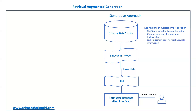Another limitation is domain-specific accurate information. LLMs are trained on publicly available external datasets, which include most information but in a generic way. For example, it may have information about how HR policies work generally, but there could be company-specific policies that it doesn't have. To get that specific knowledge, you'd need to retrain the model on private or custom data — which again takes a lot of time and resources.